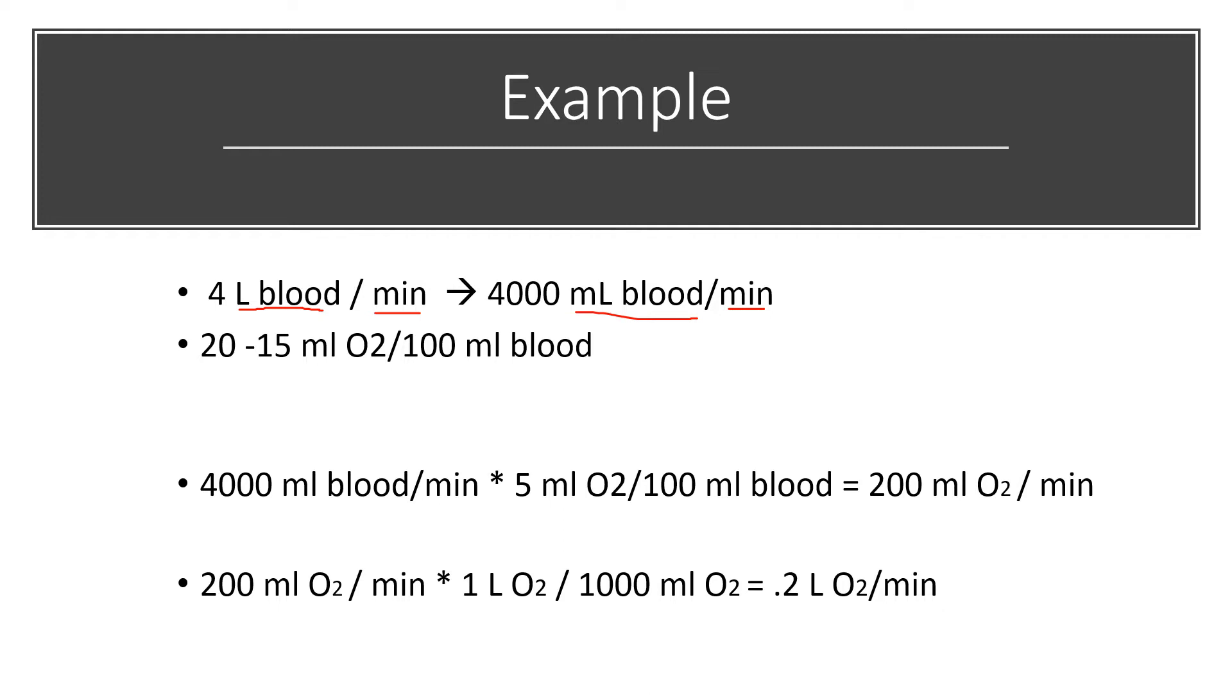We can multiply our 4 liters of blood by 1,000 because there's 1,000 milliliters in 1 liter of blood to get 4,000 milliliters.